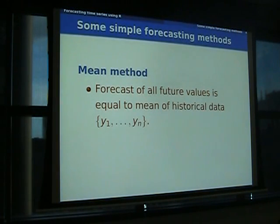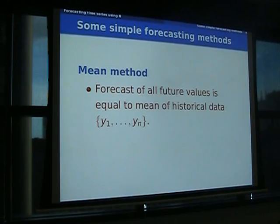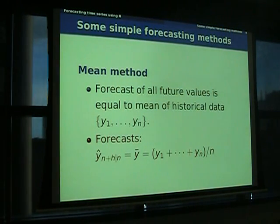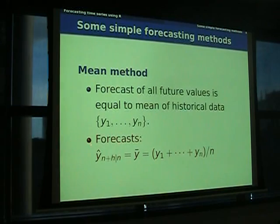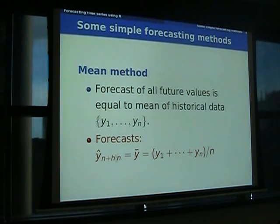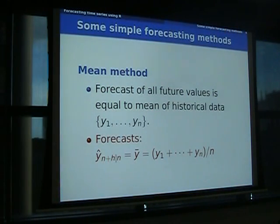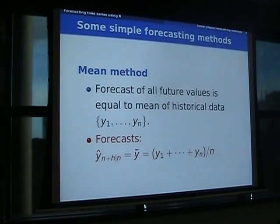The first benchmark is you take the average of all the data and say that's your forecast for however long you want to forecast ahead — the mean method. The naive method means your forecasts are all equal to the last observed value: ŷ_{n+h|n} = y_n. It's a surprisingly good forecast for a lot of things. In particular, if you have an efficient stock market, you'll find it's very difficult to beat that forecast.